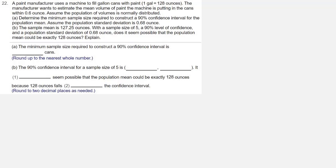Assume the population of volumes is normally distributed. Part A: Determine the minimum sample size required to construct a 90% confidence interval for the population mean. Assume the population standard deviation is 0.68 ounce.